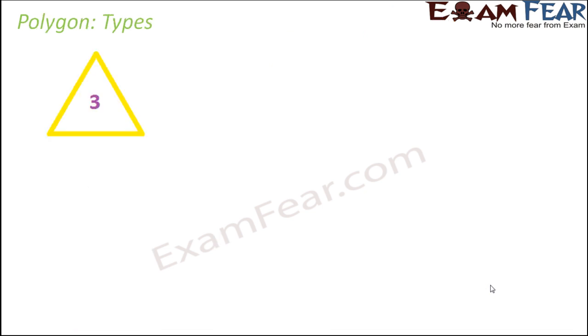Now, there are many different types of polygon. There are polygons with three sides, four sides, five sides and so on. So let us quickly look at some of the types of polygon.